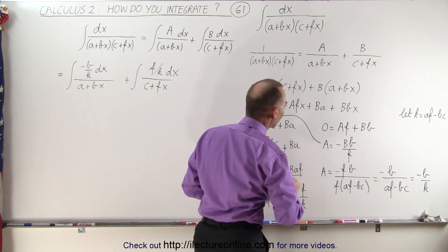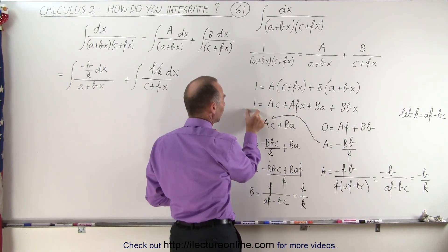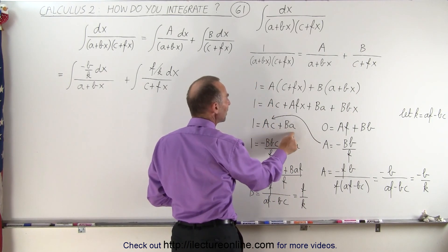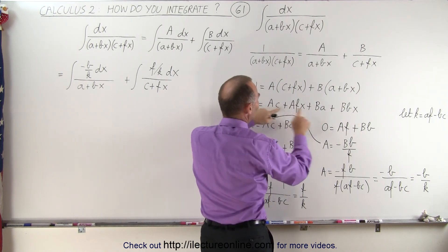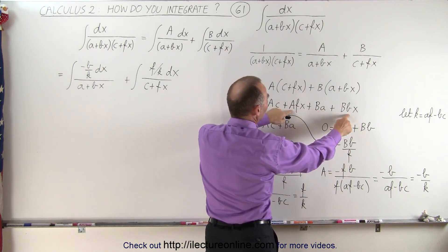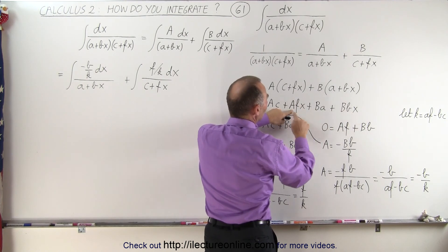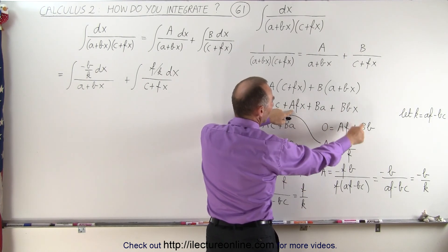We multiply everything out, and then we realize that the constant 1 equals Ac + Ba, and 0, because we know that we don't have an x term on the left side, will be equal to the coefficients of the two terms that have an x in them. So 0 equals Af + Bb.